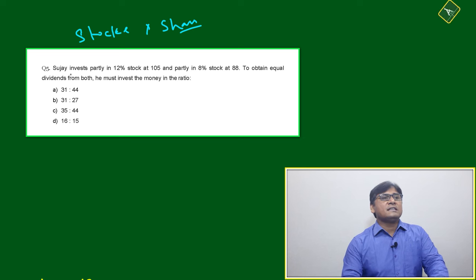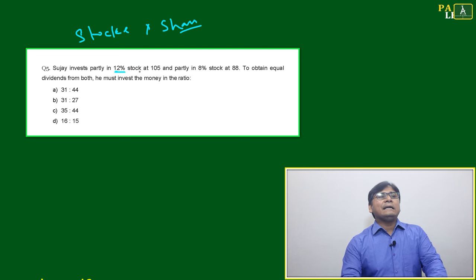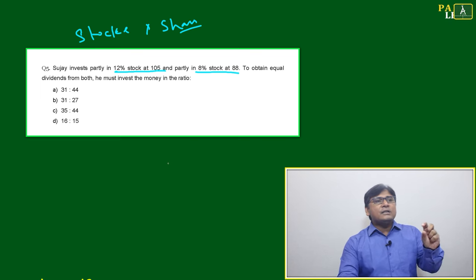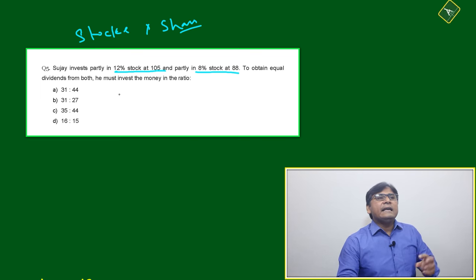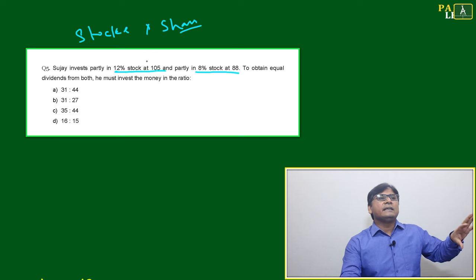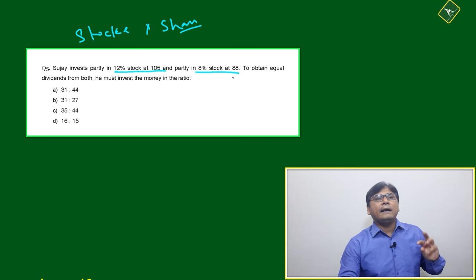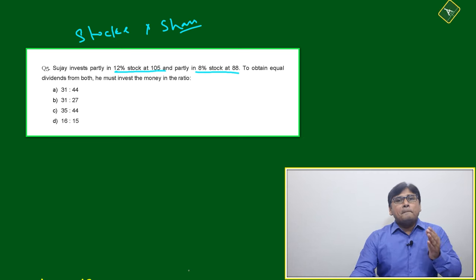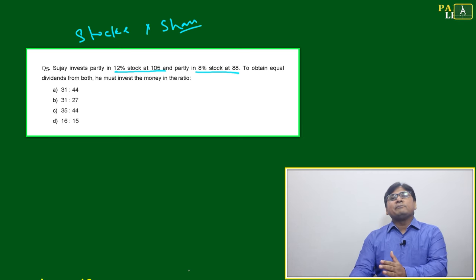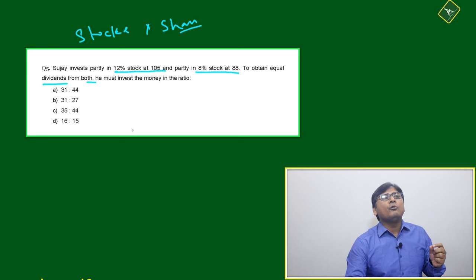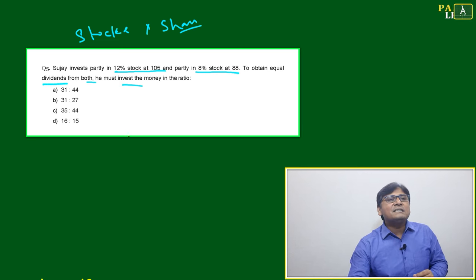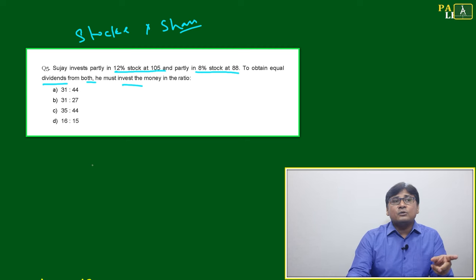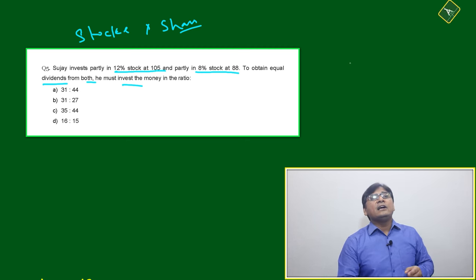This question is related to stocks and shares. Sujai invests partly in 12% stock at 105 and partly in 8% stock at 88. Sujai has some amount of money — he is investing some percentage in 12% stock at 105 and 8% stock at 88 — to obtain equal dividend. The investment amount will be different, but he is getting equal dividend from both investments.